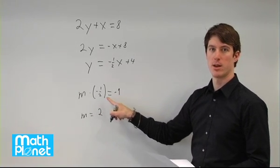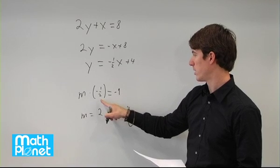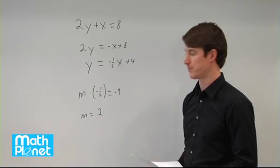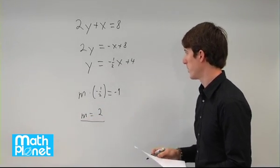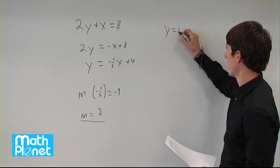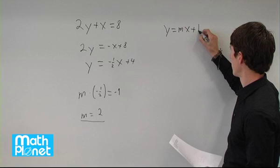If you multiply negative one-half by negative 2, then you get m equals positive 2. Great. So this is our new slope. Now we have the equation for our line, y equals mx plus b.